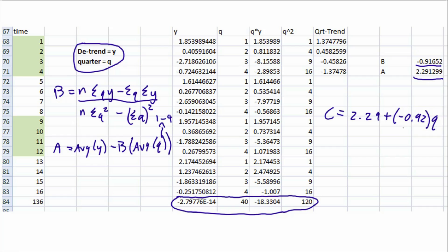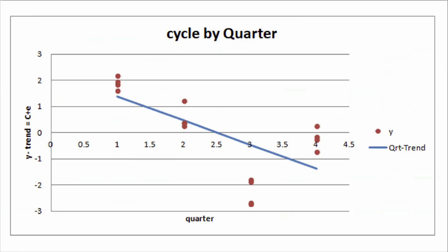Something just to note here, since this is a negative value, the line will have a negative slope. And if we actually look at the chart now, the equation we just drew out here, this is your c, that's just going to be 2.29 plus negative 0.92 times q or your quarters, which is just going to be 1, 2, 3, 4. And you'll end up with this plot.